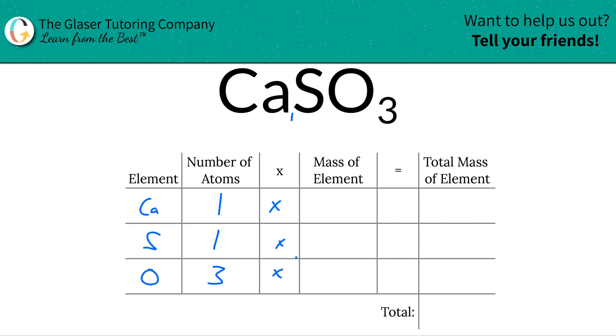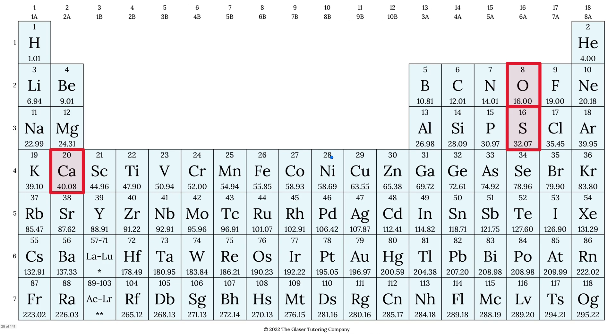Then you're going to take those number of atoms and multiply it by the mass of each particular element. So where are we going to find these masses of calcium, sulfur, and oxygen? You got it. Periodic table. Let's take a look.